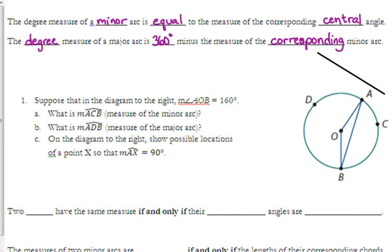It says, suppose that in the diagram to the right, the measure of AOB is 160 degrees. So this angle right in here is 160 degrees. The measure of ACB, the minor arc, is going to be the exact same as the central angle. The central angle is 160 degrees, so the measure of ACB is 160 degrees. So that means we have how much left over for the major arc? 200 degrees. We have 200 degrees left for the remainder of that arc.